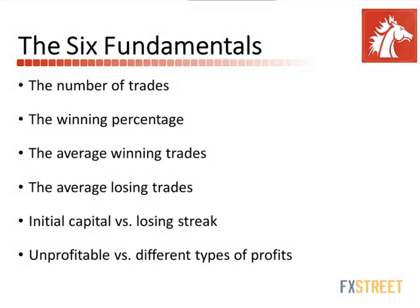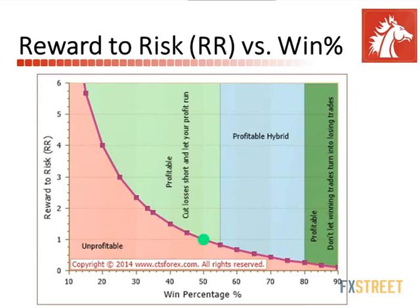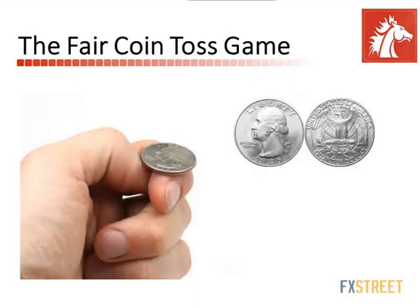Let's play a game. We're going to play a fair coin toss game. As you know, a fair coin has 50-50 — 50% head, 50% tail. And I'm going to let you toss the coin. Because if I toss the coin, you might say I could be manipulating it. Maybe we even use your coin instead of mine. That way, there's no chance that I could be cheating.